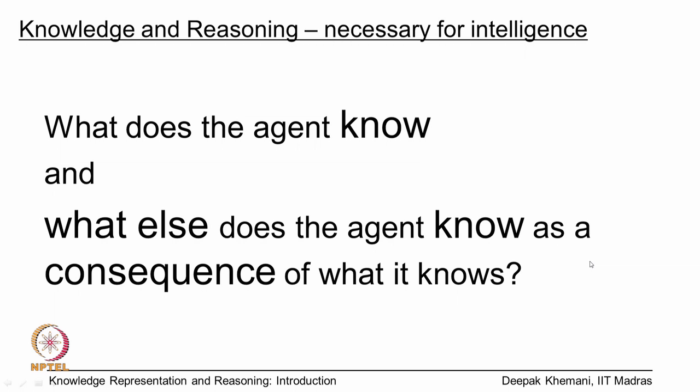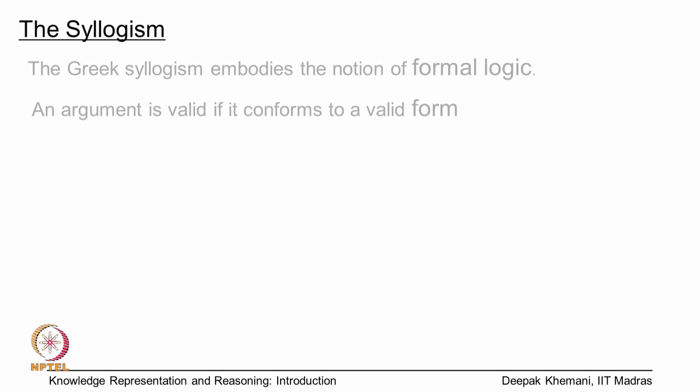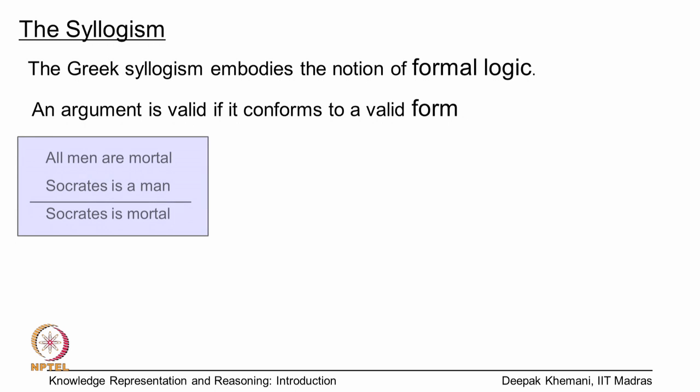Why do we not use something like natural language? The problem with language is that it is too rich and too ambiguous, as illustrated in a cartoon in Sowell's book. We instead focus on formal methods, which is based on formal logic, in which our focus is on looking at valid forms of argument.